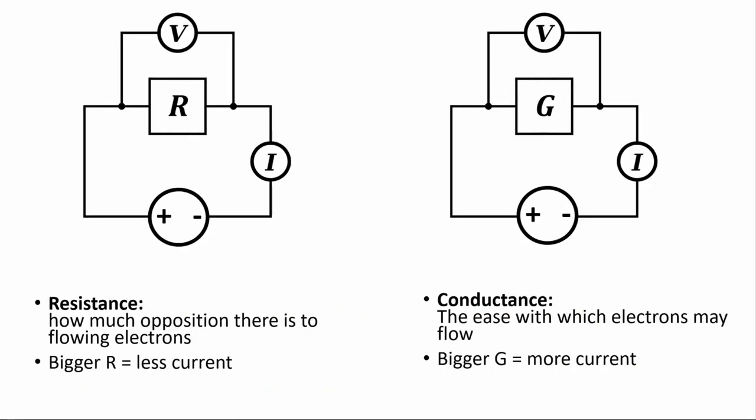The term resistance denotes the amount of opposition to flowing electrons in a circuit, while conductance represents the ease by which electrons may flow. In other words, resistance measures how much a circuit resists current, while conductance measures how easily a circuit conducts current.